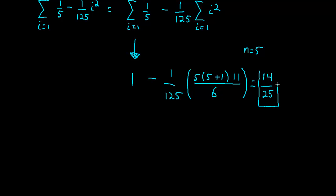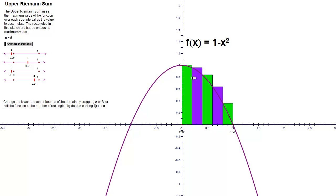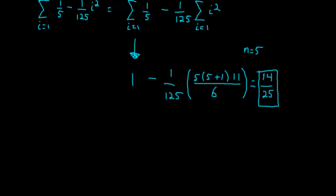And this is the underestimate — this is the lower sum for the area under this curve. Where before the upper sum was an overestimate, the lower sum is an underestimate. In the next video, what we're going to do is let the number of rectangles go to infinity and actually calculate the exact area underneath that curve.